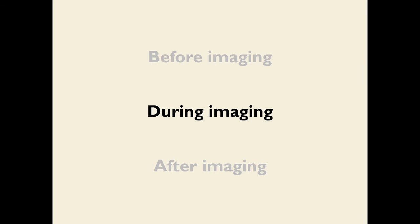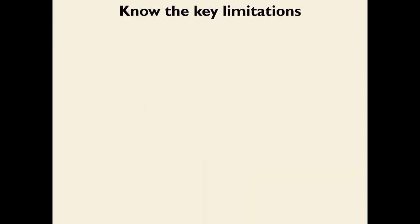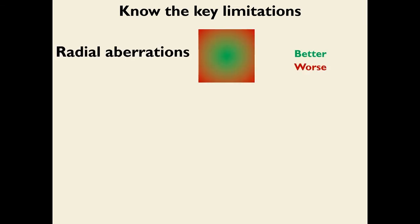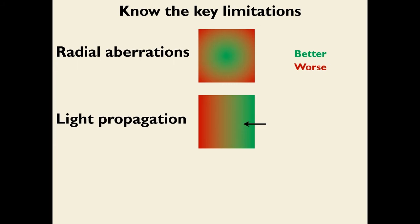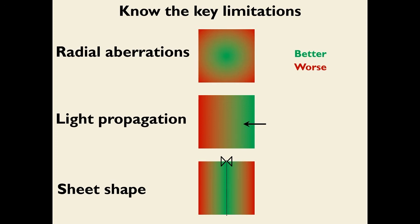Now let's talk about some things to consider during imaging — the key limitations of this kind of imaging. First, you have radial aberrations: things in the middle of the field of view will have much better quality than things far from the center. Second, you have an issue with light propagation: if you're using a light sheet from one side, the farther you go through the sample, the worse it will look. Finally, you have an issue with sheet shape — the sheet is not actually a sheet; it looks more like a bow tie when viewed from the side, which has major implications for image quality as you move away from the center. This is a bigger problem at lower magnification.